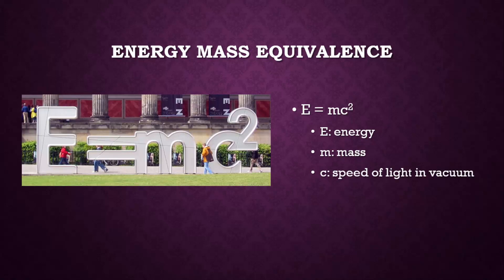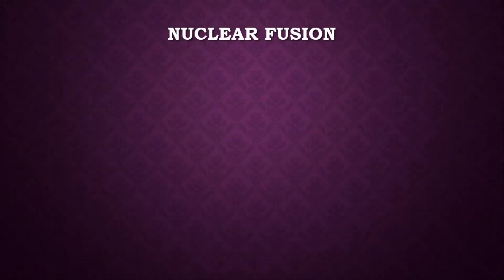Let's take a look at a couple of examples of energy-mass equivalence. The first example we'll look at is nuclear fusion. Deuterium and tritium are isotopes of hydrogen. This means that they both have one proton, but differing numbers of neutrons.